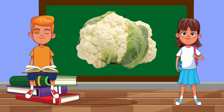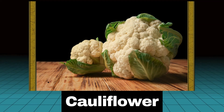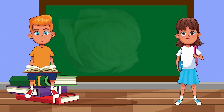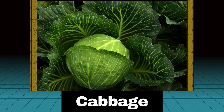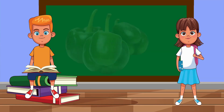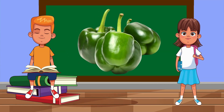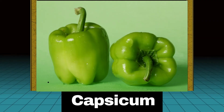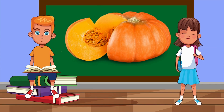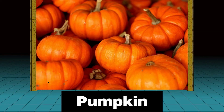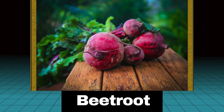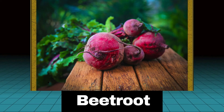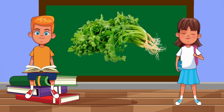What is this called? Cauliflower. Can you name this? Cabbage. What is this called? Pumpkin. Can you name this? Beetroot.